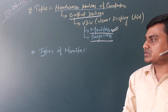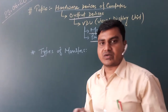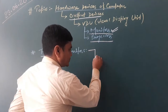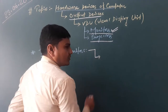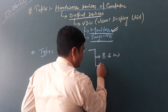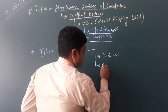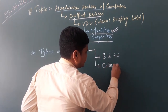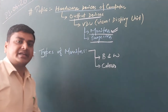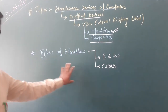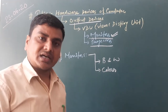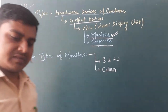Inside the types of monitors, I would like to categorize that all monitors can be categorized into two categories. One is black and white, and the other is color. So mainly, we can categorize all monitors into these two categories: black and white, and color.